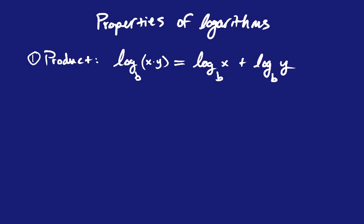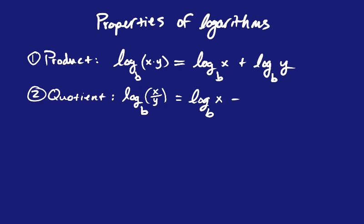So you can have yourself two logarithms instead of one expanded out using addition. The second one is the quotient property, and that is going to be log base b, and then instead of x times y, it would be x divided by y, and it would equal log base b of x minus log base b of y.